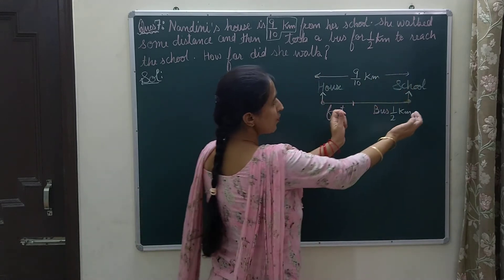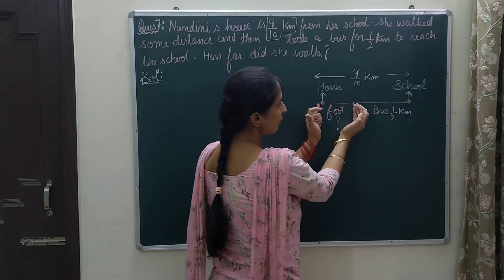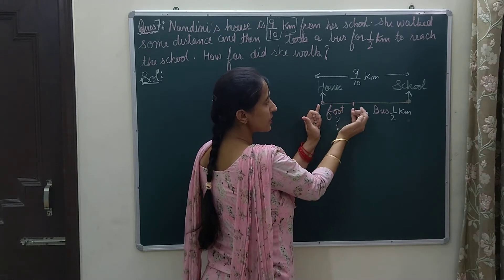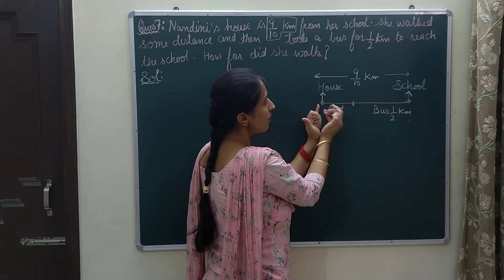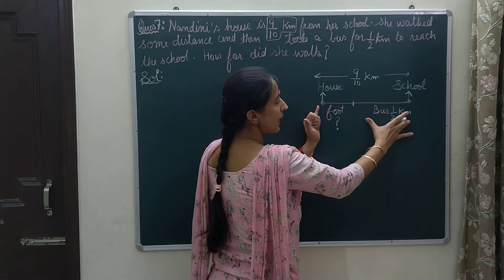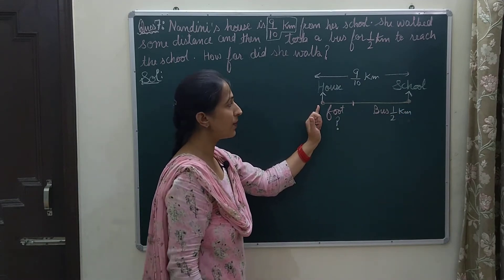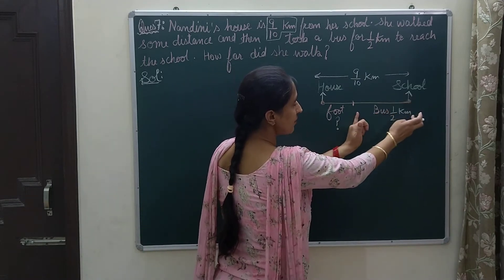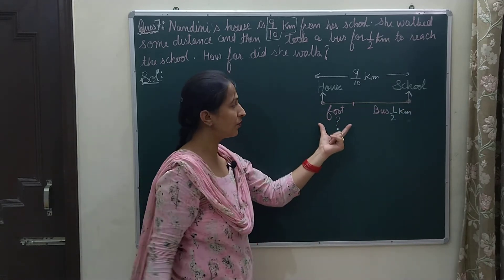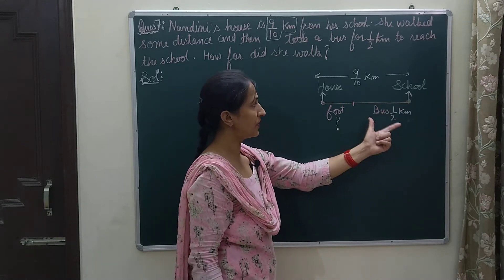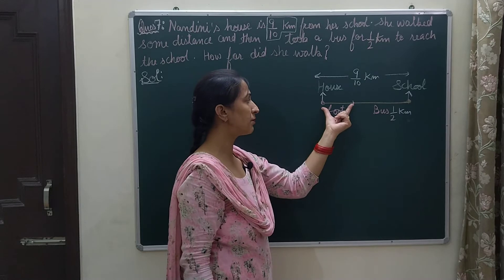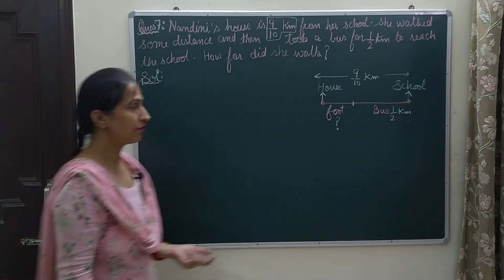You have the total distance, and in order to find how much distance she traveled by foot from the house, you will subtract the distance traveled by bus from the total distance. Out of the total, we subtract the bus distance and we will come to know how much she traveled by foot.